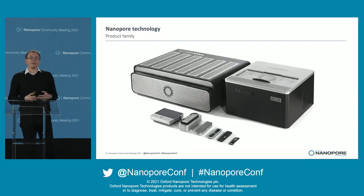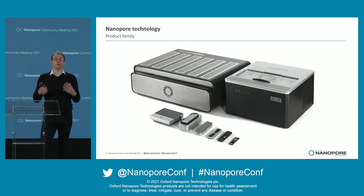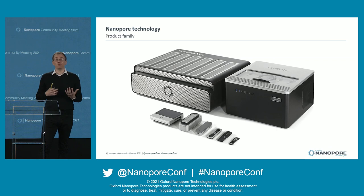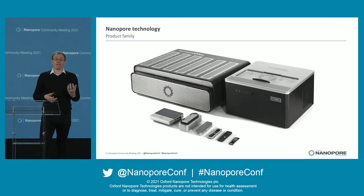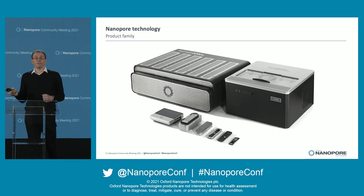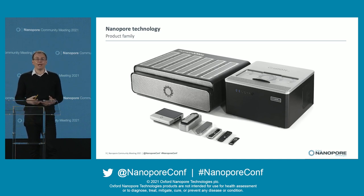Looking at the instruments across our product family, we go from big to small. We have Promethium, which can run a massive 48 flow cells — each can acquire up to 3,000 channels at once. At the other end, we have the Flongle, which has 126 channels but is our cheapest flow cell offering, allowing a really affordable cost per test.